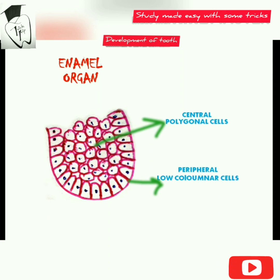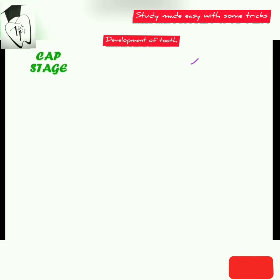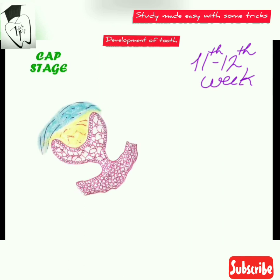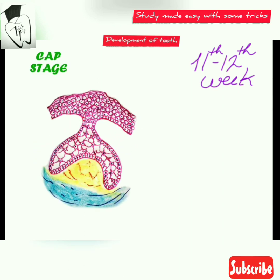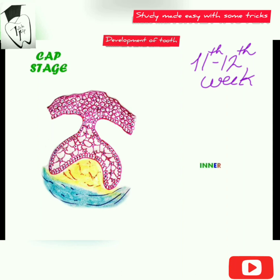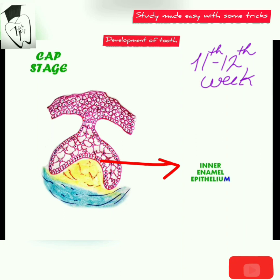During the 11th to 12th week of pregnancy, the tooth bud continues to proliferate and the growth is not uniform. The ectomesenchymal cells push the enamel organ inward, leading to the cap stage. It resembles a cap sitting on a ball of ectomesenchymal condensation. Here the cellular phenotype also changes — this is the inner enamel epithelium and the outer enamel epithelium.